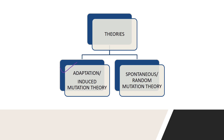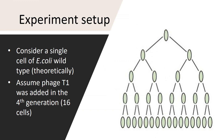The second theory is the spontaneous or random mutation theory, which states that mutation is a random event and can occur in the presence or absence of a mutagen. So the first theory said mutation can occur only when the mutagen is present, whereas the second theory said mutation can occur randomly, irrespective of the presence or absence of the mutagen.